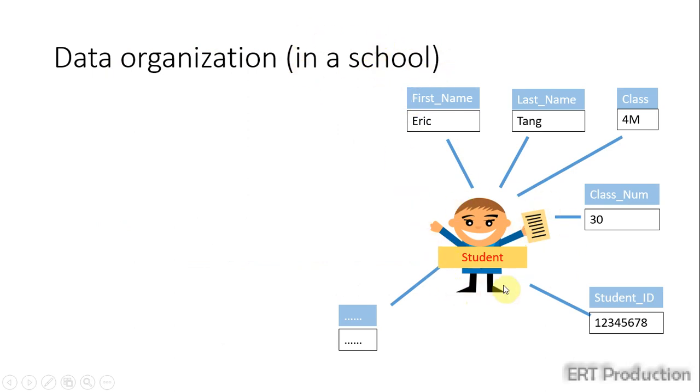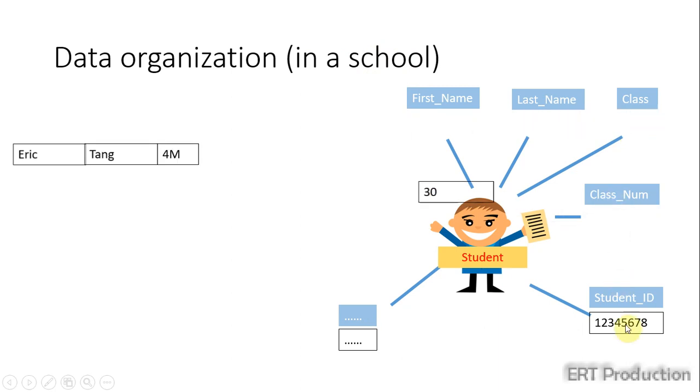The most obvious data we want to store are the data of students. In fact, we have many properties to describe a student, such as his or her first name, last name, class studying, class number, student ID, etc.